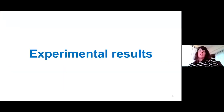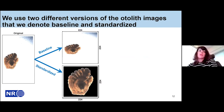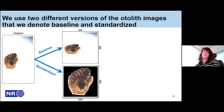Moving on to the experimental results, we used otolith images from the Norwegian Institute of Marine Research as our source domain, and otoliths from the Icelandic Marine and Freshwater Institute as our target domain. We experimented with two different versions of the data: the baseline data, which is the original otolith image resized to 224×224 pixels for training, and the standardized data, where images are transformed to suppress differences in backgrounds by setting all background pixels to black, suppress size differences between otoliths while preserving the origin, and importantly, preserving the original colors of the otolith without change.